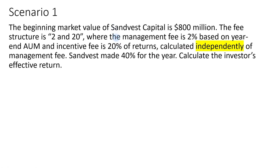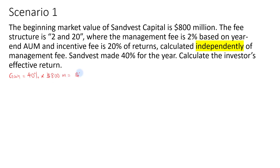Now let's look at the first scenario. The beginning market value of SanVest Capital is $800 million. The fee structure is 2 and 20, where the management fee is 2% based on year-end AUM and the incentive fee is 20% of returns calculated independently of management fee. SanVest made 40% for the year. We need to calculate the total fees — management fee plus incentive fee — and deduct that from the return. The gain is 40% of $800 million, which gives us $320 million.